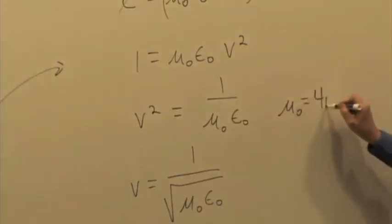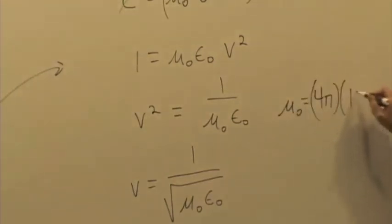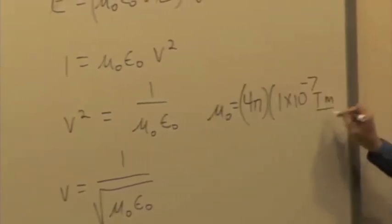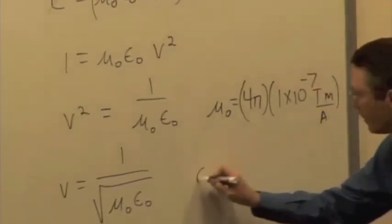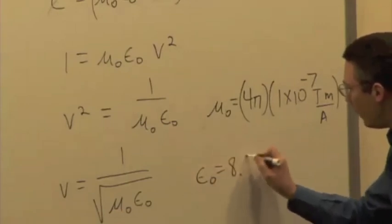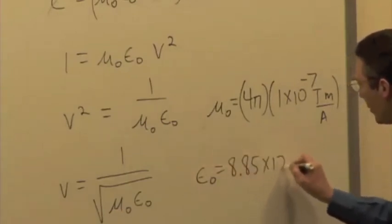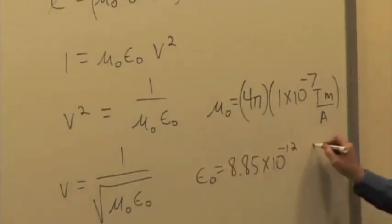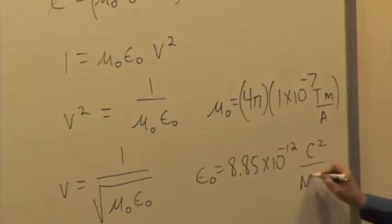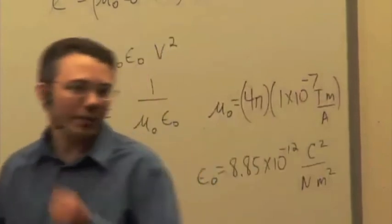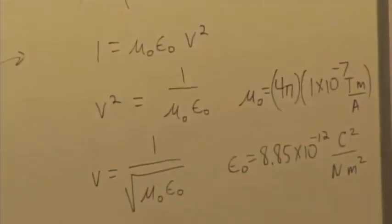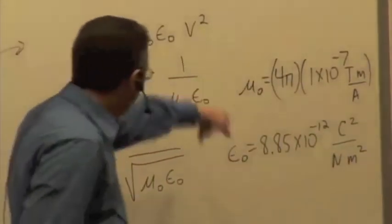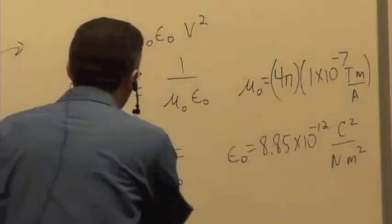Well, mu naught is 4 pi times 10 to the minus 7, and the units are tesla meter per ampere. And epsilon naught is 8.85 times 10 to the minus 12 coulombs squared per newton meter squared. So here's what I want you to do: take out a calculator, plug those numbers into this relationship, and calculate what V is.